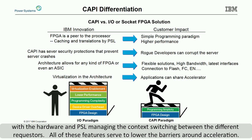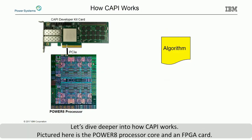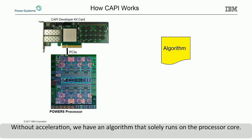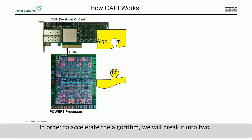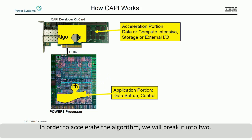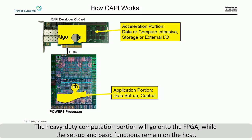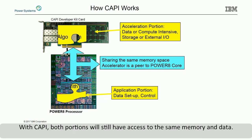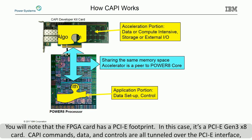Let's dive deeper into how CAPI works. Pictured here is the Power8 processor core and an FPGA card. Without acceleration, we have an algorithm that solely runs on the processor core. In order to accelerate the algorithm, we will break it into two: the heavy-duty computation portion will go onto the FPGA, while the setup and basic functions remain on the host. With CAPI, both portions will still have access to the same memory and data. The FPGA card has a PCIe footprint — in this case, a PCIe Gen 3 x8 card. CAPI commands, data, and controls are all tunneled over the PCIe interface, but the processor knows this is a CAPI card and treats it differently than a standard PCIe card.